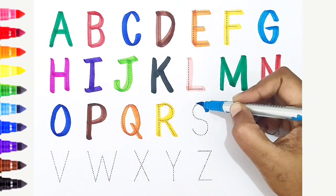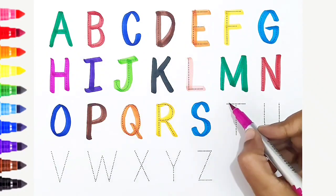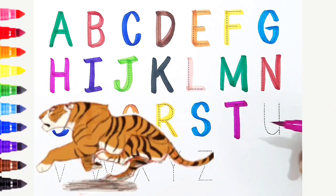S, light blue color. S is for sun. T, dark pink color. T is for tiger.